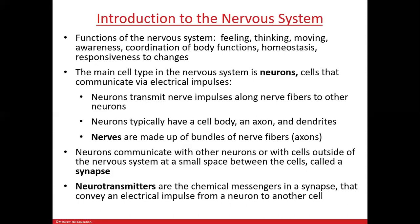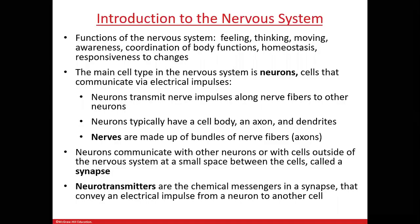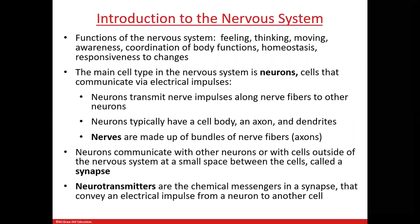Neurons communicate with one another or with their target organ via a structure called the synapse. The neuron doesn't actually touch the next cell — it comes close, but there's a gap called the synapse. This is important because if neurons did touch, it would be very difficult to stop an impulse — much like when you get shocked and tighten all your muscles for as long as the electricity flows. Instead, neurons send messages via chemical signals called neurotransmitters.